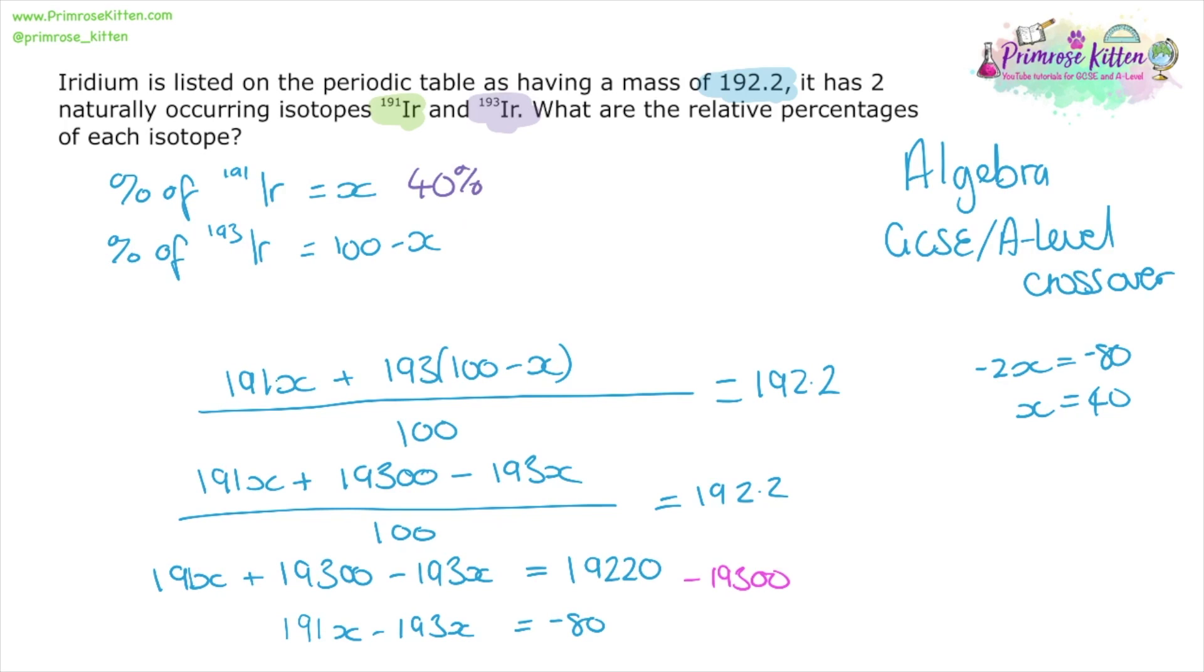Now the answer isn't X equals 40 because that wasn't what the question was asking. The question was asking the relative percentages. So we need to do an extra step, the bit that lots of people forget, and go back to the question and say that there is 40% of iridium-191 and 60% iridium-193.